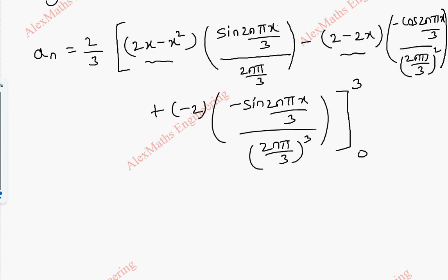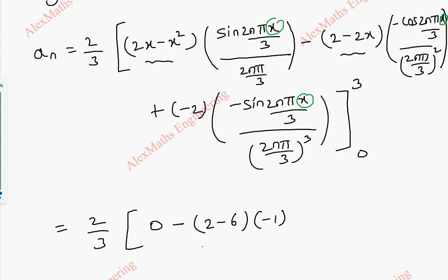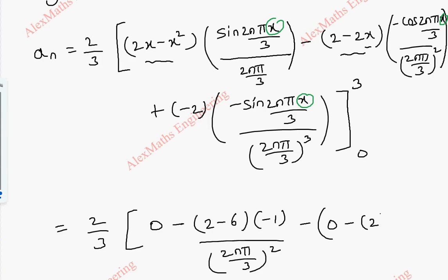When we substitute x equals 3, the 3s cancel, sin(2nπ) is 0, and cos(2nπ) is 1. So the first term is 0. The second term: 2 minus 2 times 3 is minus 4, and cos(2nπ) is 1, with a minus sign, divided by (2nπ/3) squared. The last term is also 0 because of sine. When we put the lower limit: the first term has sine so it is 0, and the second term gives minus (2 minus 0) times 1, i.e., minus 2, divided by (2nπ/3) squared. The last term is 0 because of sine.